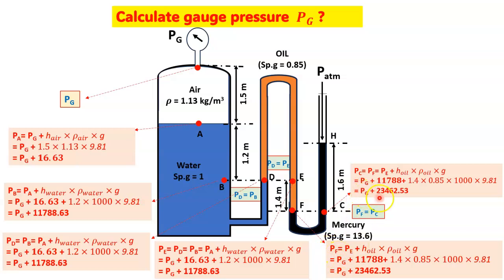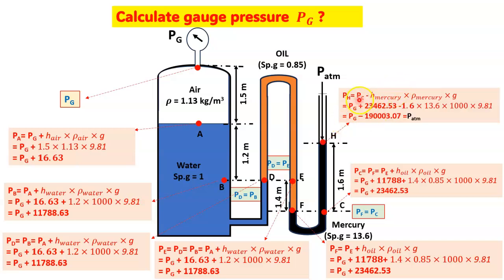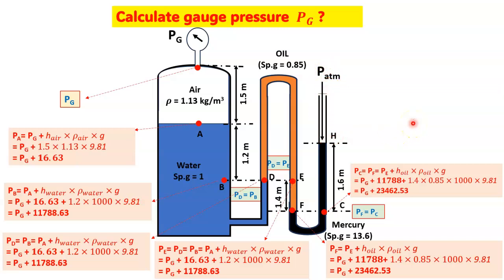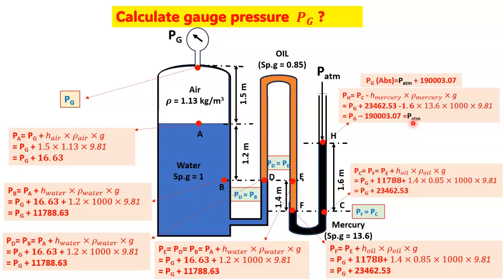Now going upward through the mercury column (h = 1.6 m, SG_mercury = 13.6), pressure decreases: Ph = Pc − h_mercury × ρ_mercury × g = (Pg + 23462.53) − (1.6 × 13600 × 9.81) = Pg − 190003.07. Since this limb is open to atmosphere, Ph = P_atm.